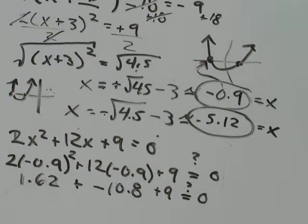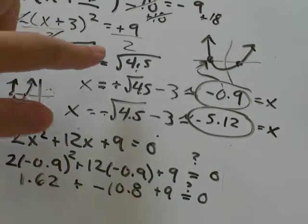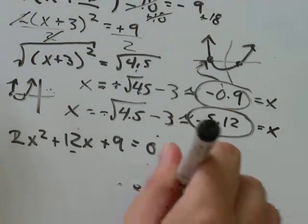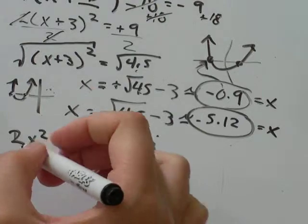That looks pretty close to being equal to 0 to me. It's just a couple issues with rounding error from the square root of 4.5. That's close enough.